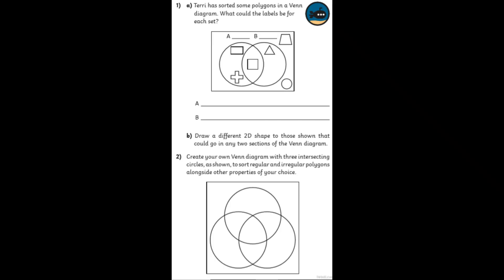And then, finally, chilli 3. This time, Terry has sorted some polygons in a Venn diagram. What could the labels be? So, what could the criteria be for A and B? And noticing the shape in the middle would have to have both of those criteria. Whereas the shapes in the top right and bottom right can't fit either of the criteria. I wonder what that could be. Second part, can you draw a different 2D shape to those shown that could go in any 2 sections of the Venn diagram? So, what could you draw and add to your diagram?